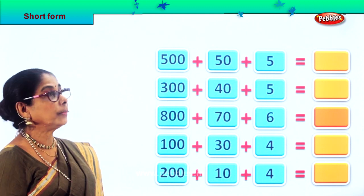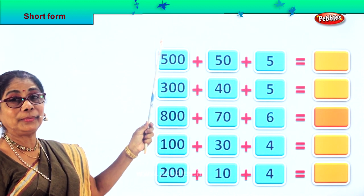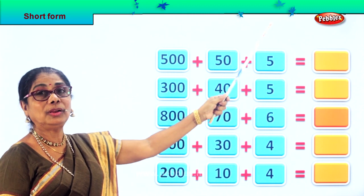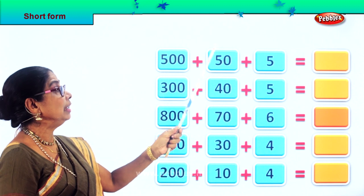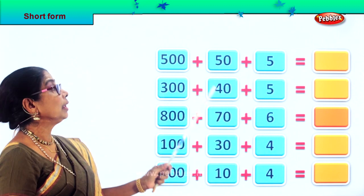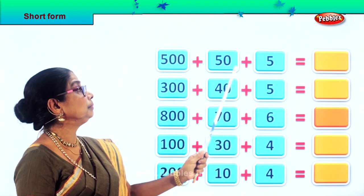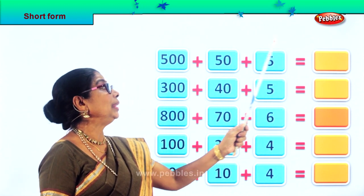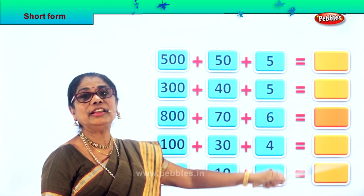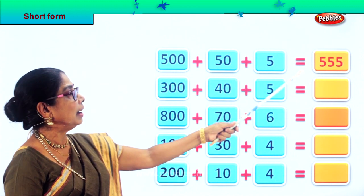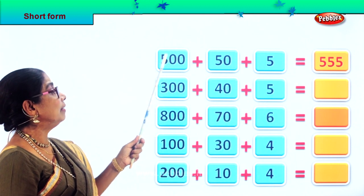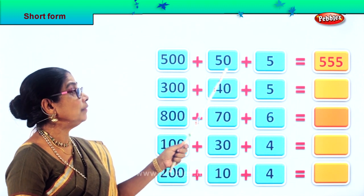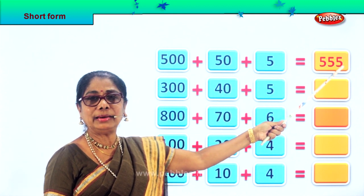Now look, this is the ones place, tens place, hundreds place. We have here 500 plus 50 plus 5. So 500 is in the hundreds place, 50 in the tens place, and 5 in the ones place. So we'll get 555. Short form of 500 plus 50 plus 5 is equal to 555.